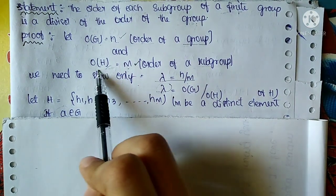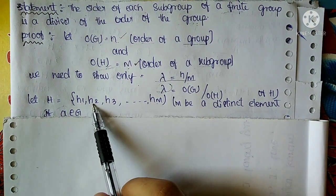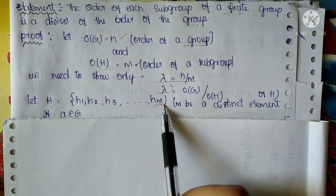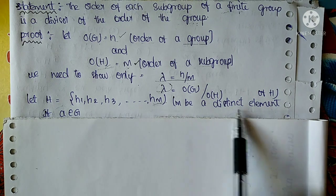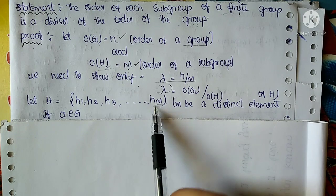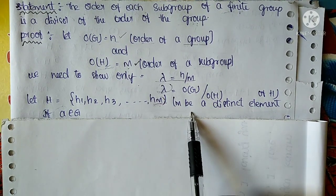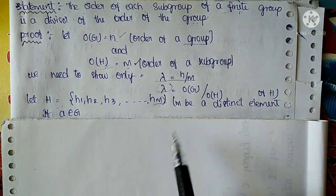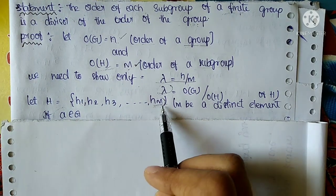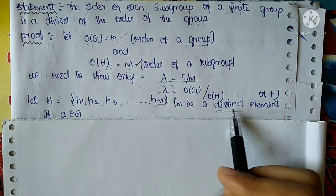Let H be a subgroup. The elements of H are h1, h2, h3, ... up to hm — these are the m distinct elements of H.